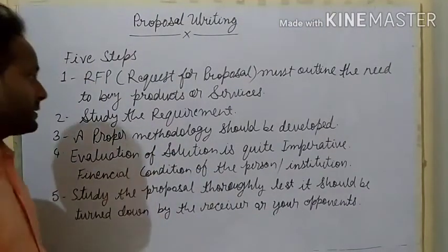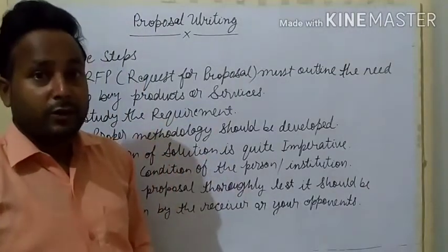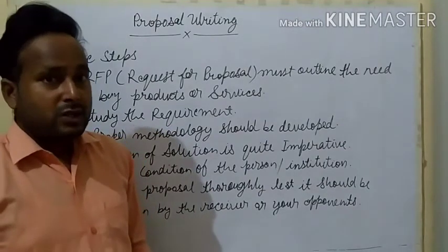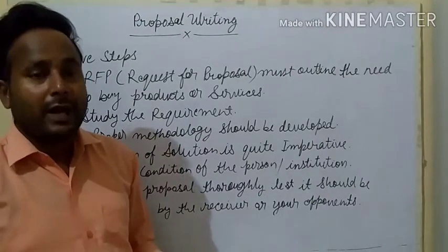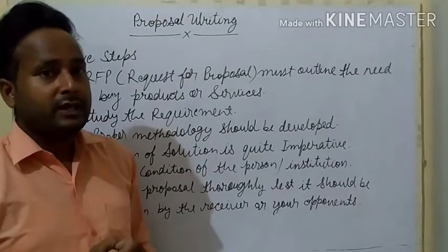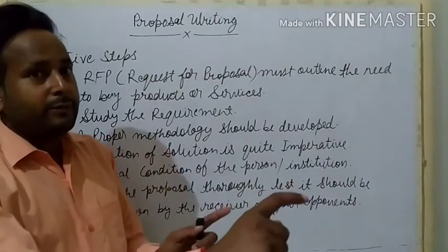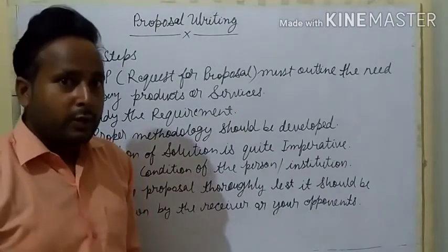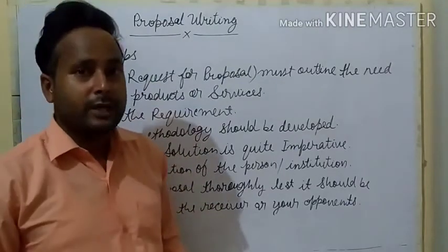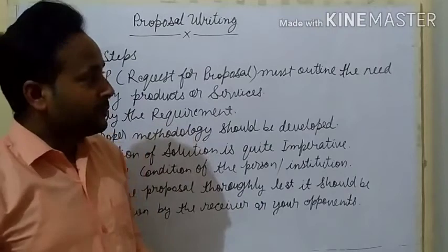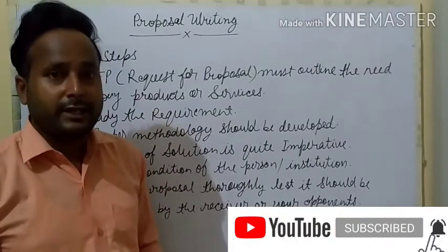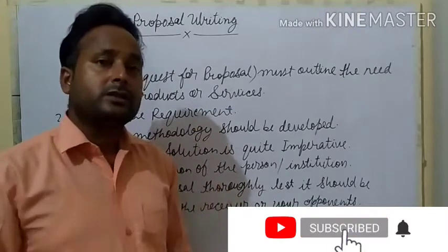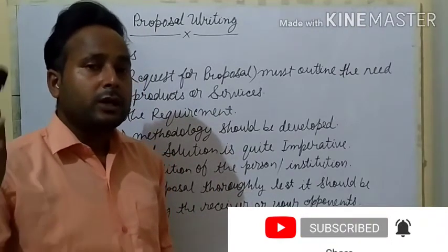Second point: study the requirement. Requirements ko study karne ka matlab hai — kya chahiye, kitna chahiye, aur kyun chahiye? Suppose school mein old blackboards hain, chalk and dust se dust harmful hoti hai teachers aur children ke liye bhi. Toh unki jagah whiteboard aa jaye aur safe marker use ho jaye — no dusting. Requirements ko achhe se study karenge taaki saamne waale ko samjha sakein ki hum proposal kyun rakh rahe hain. Chahe coolers lene ho, furniture ya kuch bhi — saamne waale ko samjhana padega ki aapko iski zaroorat kyun hai, tabhi woh agree karega.